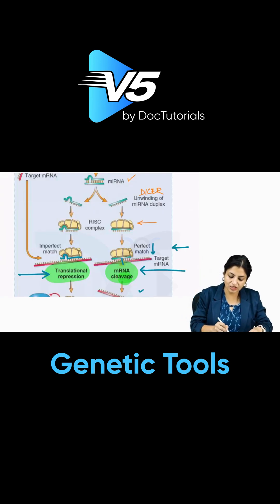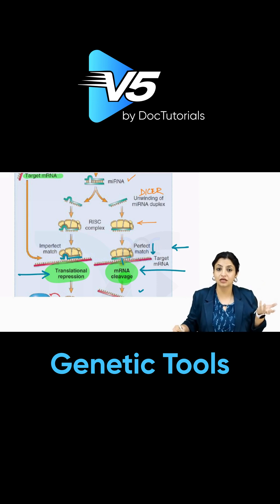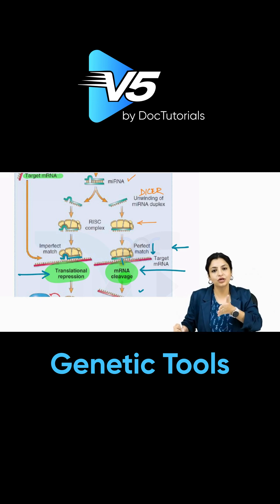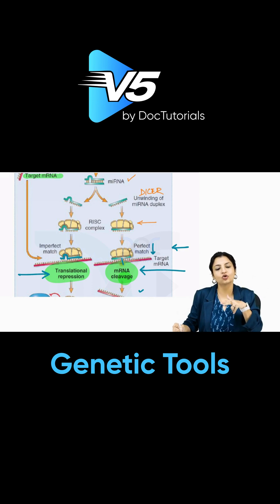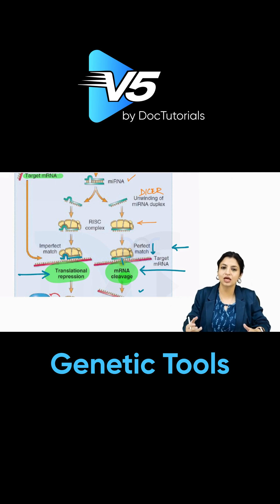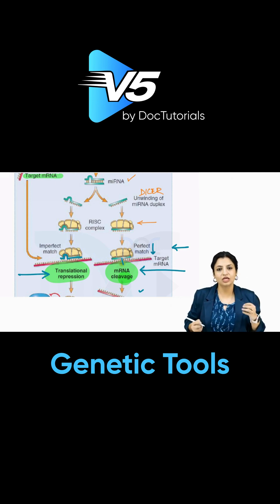Let's say this is the target mRNA. For example, a patient has sickle cell disease — they have sickle cell DNA producing sickle cell RNA, causing sickle cells to appear in the blood and causing problems. What you can do is cut the sickle cell RNA itself. If you cut the sickle cell RNA, sickle cells will not appear in the blood, so there will be no vaso-occlusion and no anemia. You can do this with the help of micro RNA.